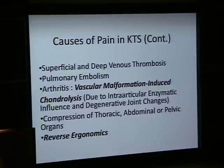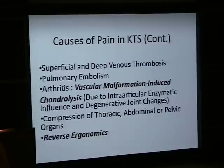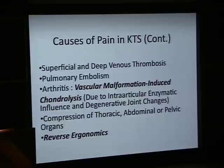Dr. Rosen alluded to arthritis in patients with KT because of the involvement of venous malformation in the periarticular area and also intraarticular area, because of chondrolysis — destruction of the cartilaginous tissue due to enzymatic influence in that area — leading to destruction and deformity of the joints.